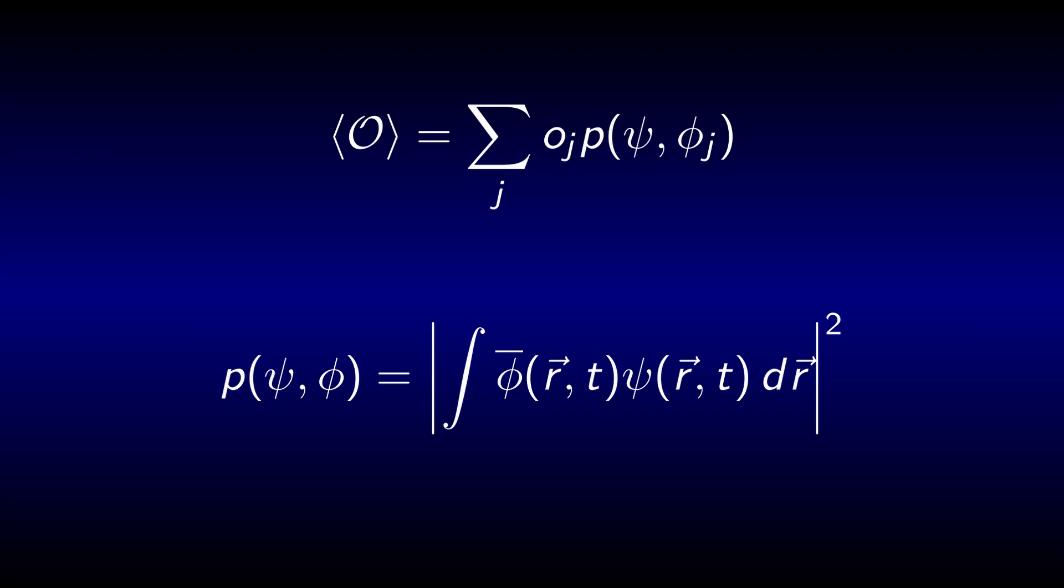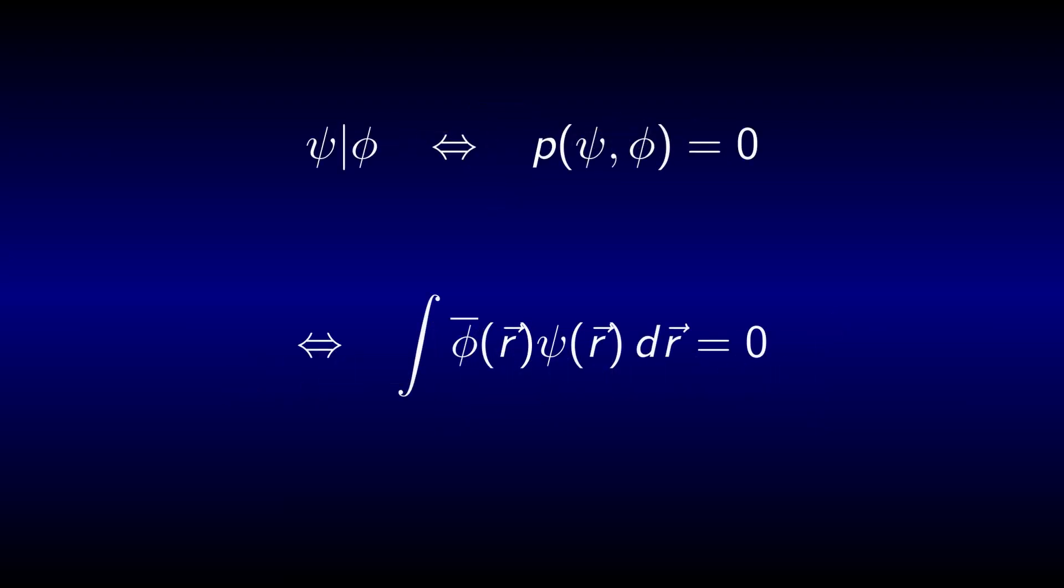For this the notion of an orthonormal basis set is very helpful. We say that two wave functions are orthogonal to one another if the probability of finding one in the state of the other is zero.